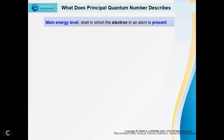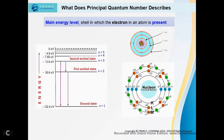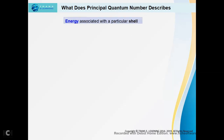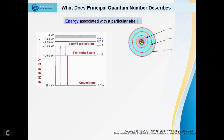Now, what does principal quantum number describe? First, principal quantum number describes the main energy level, that is, the shell in which an electron is present in an atom. The moment an electron enters an atom, it will first enter the principal main energy shell — that means the electron wave adopted by an electron when it enters the atom. The principal quantum number also describes the energy associated with a particular shell.